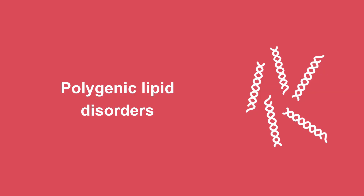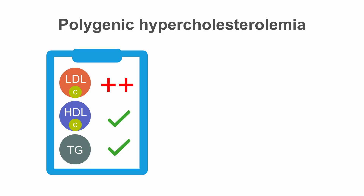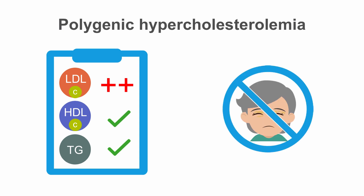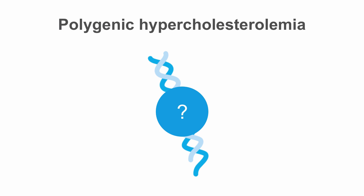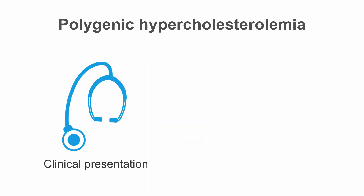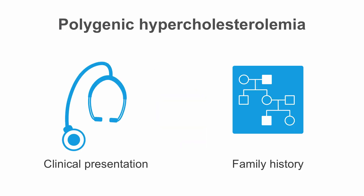There are a variety of polygenic lipid disorders. Polygenic hypercholesterolemia is very common. It can be hard to distinguish from monogenic familial hypercholesterolemia, but characteristic signs are usually missing. The genes that cause polygenic hypercholesterolemia are currently not entirely known, so the disorder is diagnosed based on clinical presentation and family history.